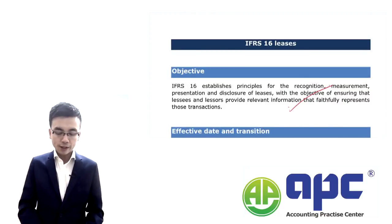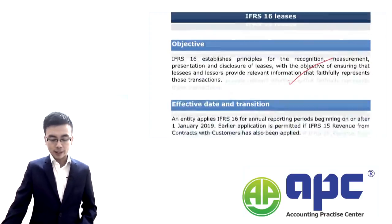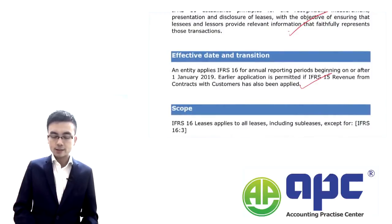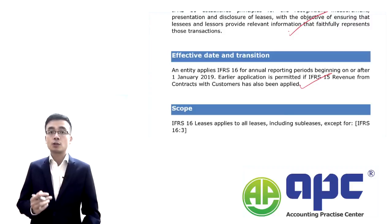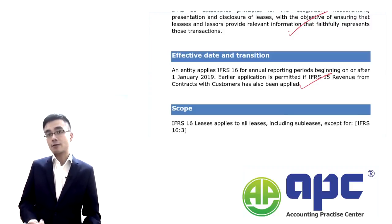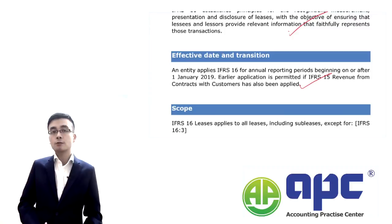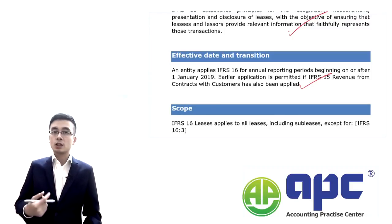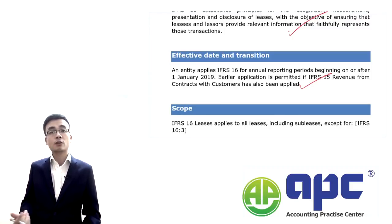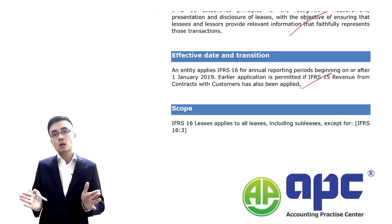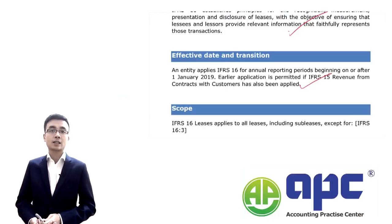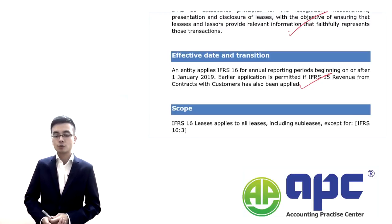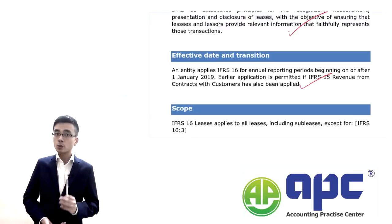We've talked about the objective for IFRS 16 and you will see the effective date is from 1st January 2019. If you were to adopt IFRS 16, it would be better for you to also adopt IFRS 15, which is revenue from contracts with customers. Both of these accounting standards talk about the standalone price and how we're going to allocate the transaction price according to that percentage.